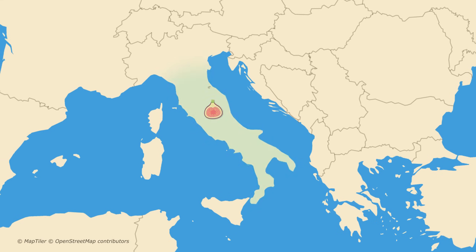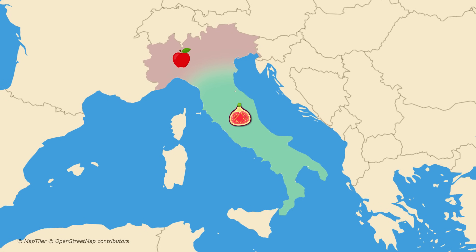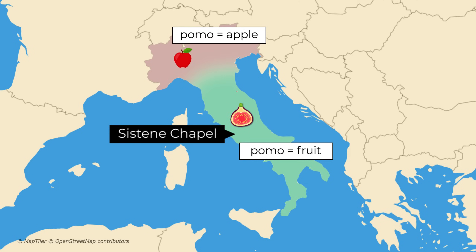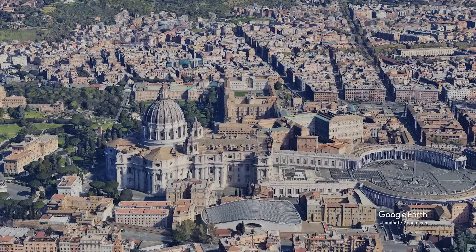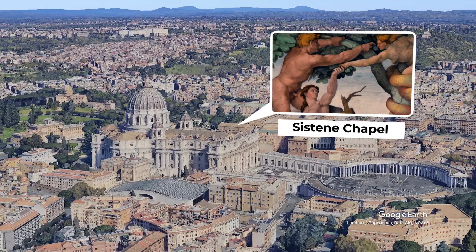This also explains why in Southern Italy the fig continued to dominate over the apple until much later. In the north, the meaning of the Italian word pome narrowed to mean apple, but in the south pome could refer to many fruits, and so the fig tradition persisted. This is also the region that gave birth to perhaps the most famous depiction of the forbidden fruit — Michelangelo's Sistine Chapel — which famously features a fig.